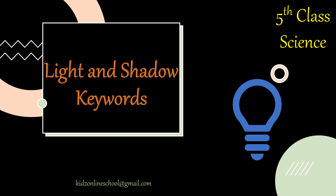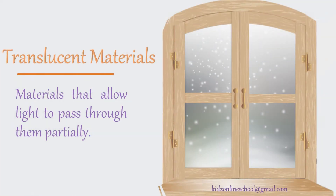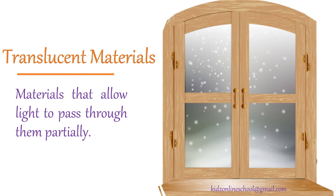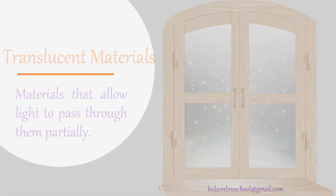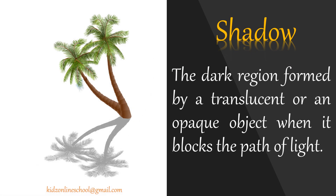Light and Shadow keywords: Transparent materials — materials that allow light to pass through them completely. Translucent materials — materials that allow light to pass through them partially. Opaque materials — materials that do not allow light to pass through them. Shadow — the dark region formed by a translucent or an opaque object when it blocks the path of light.